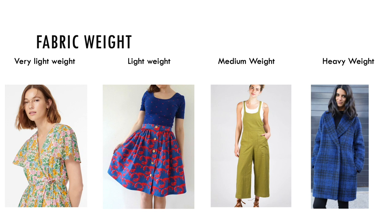Medium to medium-heavyweight fabrics are six to ten ounces. These are good for thicker shirts, skirts, and pants. Some examples include flannel, some heavier linens, French terry, Tencel twill, and some lighter denims. This woman is wearing a jumpsuit made from a medium weight linen.